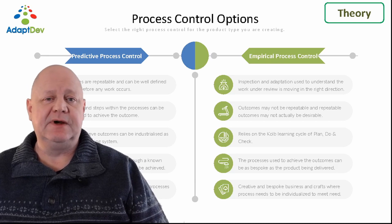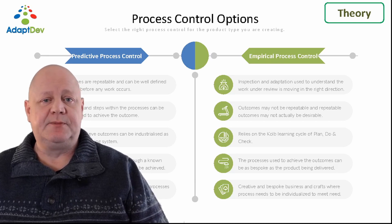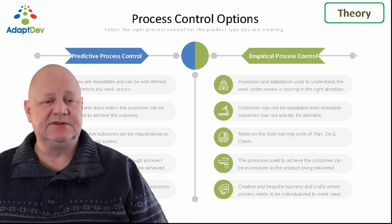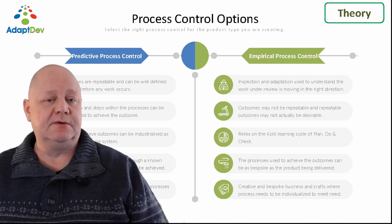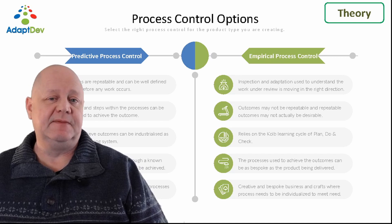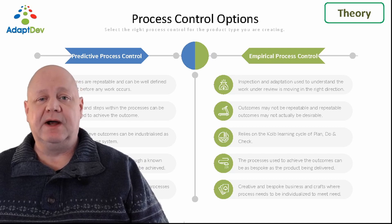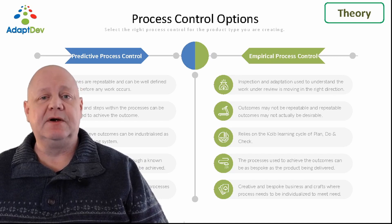This is suitable for creative industries and crafts where processes need to be individualised to suit the need. Scrum employs empirical process control as it thrives in a complex environment where outcomes and the processes required to deliver them cannot always be well defined up front.